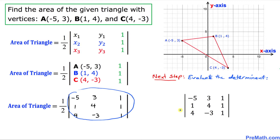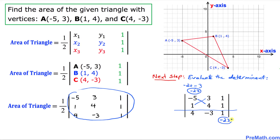Let me show you an easy way to find the value of this determinant. Just simply draw this horizontal line and let's crisscross. Multiply this part: negative 5 times 4 is going to be negative 20, and then you always put a minus sign. 3 times 1 is 3. Negative 20 minus 3 is going to be negative 23. This negative 23 is going to go in the opposite side right up here.